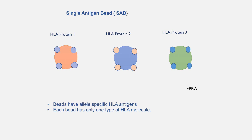We can use the antibody profile measured by single antigen bead to calculate CPRA, or calculated PRA. We compare the antibody profile of the person with the antigen profile of potential donors. We can also use results of this test for virtual cross-match, in which we identify if the potential recipient has antibodies to donor-specific HLA antigens.